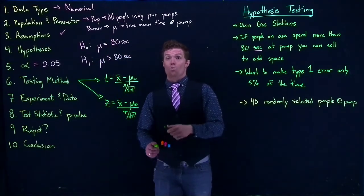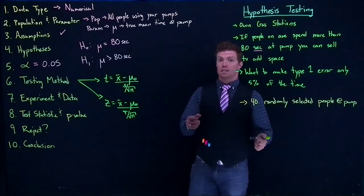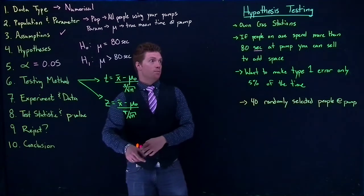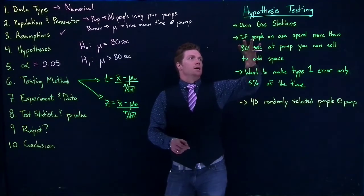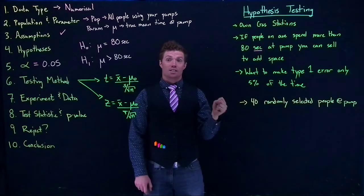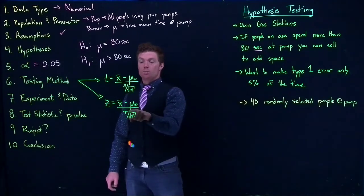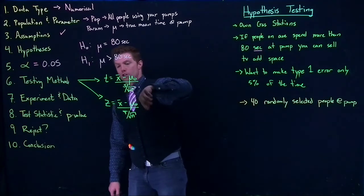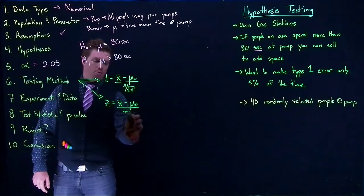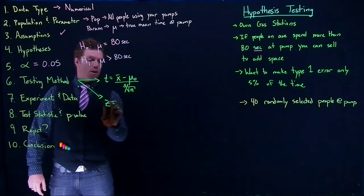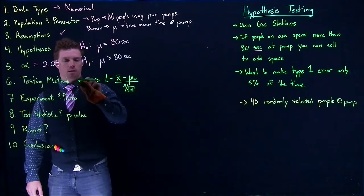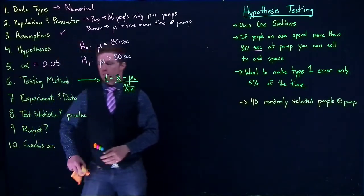We need to know what the problem has given us. Our scenario does not give us a population standard deviation. Because we don't have a population standard deviation, we can't use the z-method — it requires that population standard deviation. Since we don't have it, we are going to use the t-distribution method.